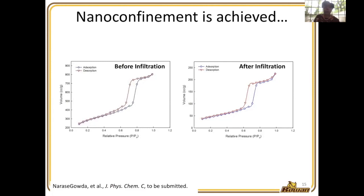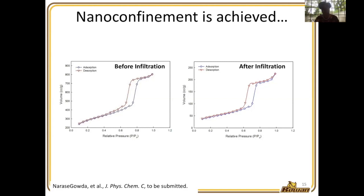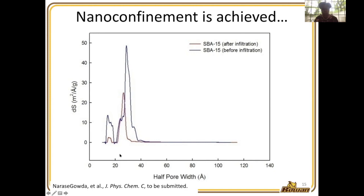Before taking the SBA-15 material to quasi-elastic neutron scattering at NIST NCNR, we wanted to confirm we had achieved nanoconfinement. We used BET surface area measurements with nitrogen gas. The curves look very similar, but the scale shows about a third less available pore space for nitrogen gas to adsorb onto after infiltration, meaning our material has infiltrated those pores. When we transform the data into actual pore size or pore half-width, we see the largest pores get a smaller size and the smallest pores are greatly reduced in number. Nanoconfinement is indeed achieved.